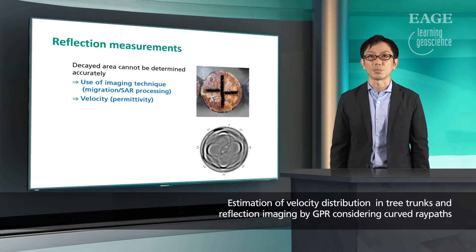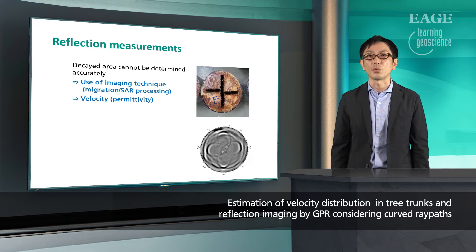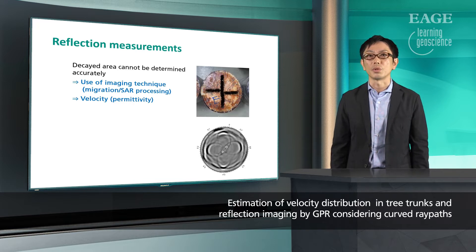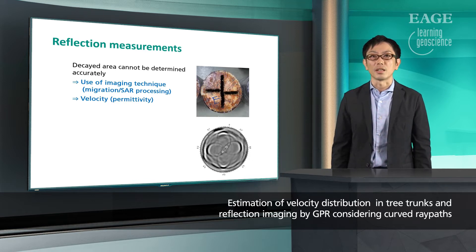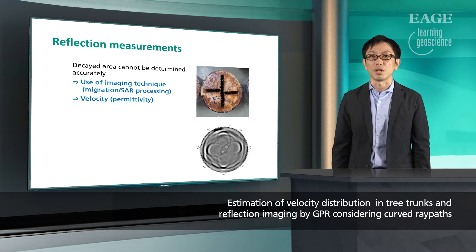With this result, it is difficult to evaluate the decayed area. So we use imaging technique, migration or synthetic aperture radar processing. And for this, we need to set the velocity or permittivity of tree trunk.